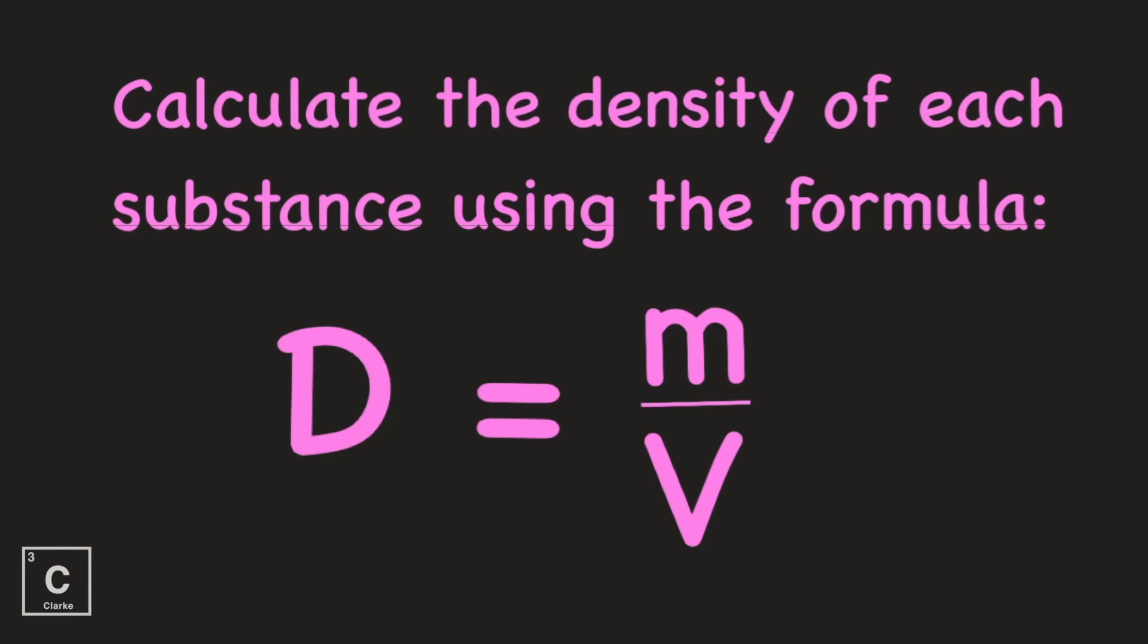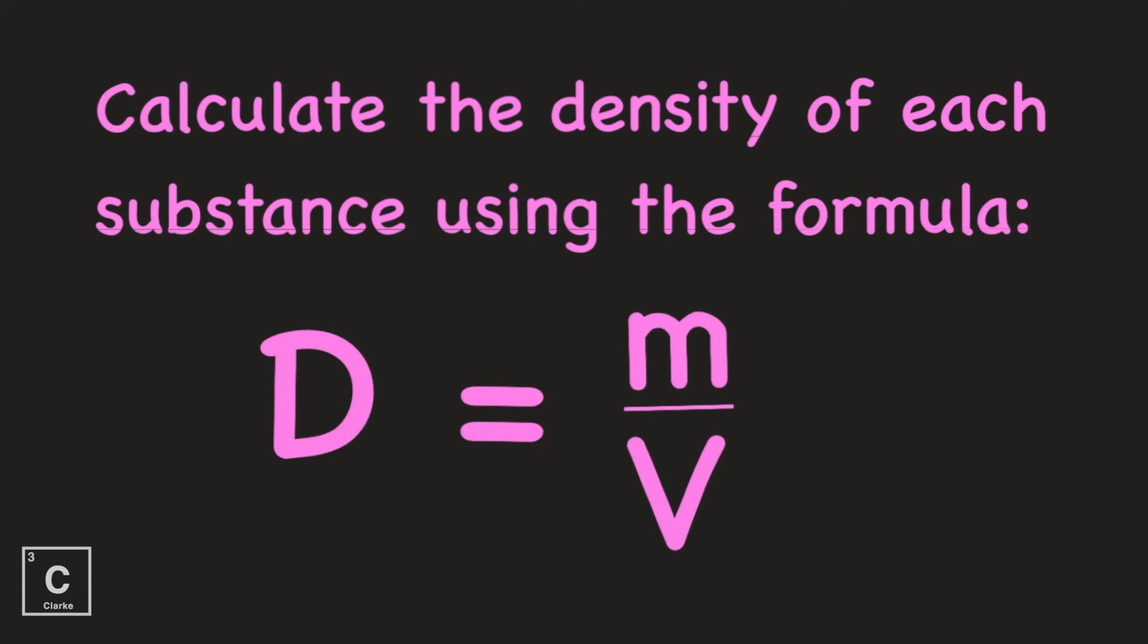Okay y'all, we have collected all of our data that we need to calculate density. Here is the formula for density. Density, capital D, equals the mass divided by the volume. So we have little m for mass and the big V for volume. And the very last thing that we need to talk about are the units for density. This is what we call the derived unit, where we're going to combine some units together. So the unit for mass is grams, and the unit for volume is milliliters. Grams per milliliter. Derived units will also help you kind of figure out the formula. Grams is on top, so mass was on top. Milliliters is on bottom, so volume was on bottom. So we knew we had to divide mass by volume to get density.